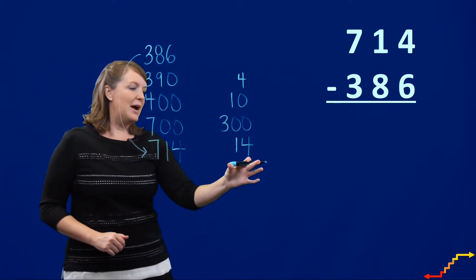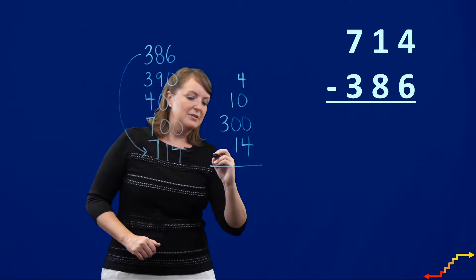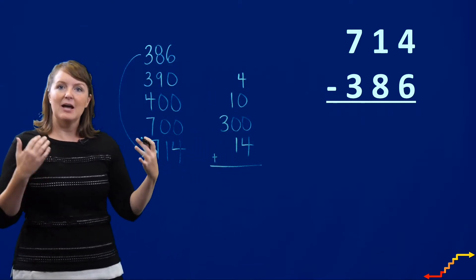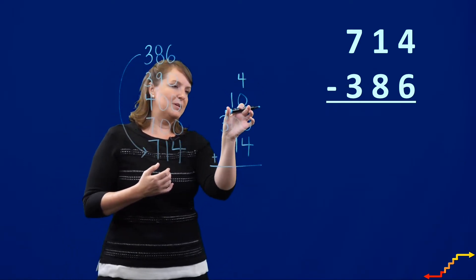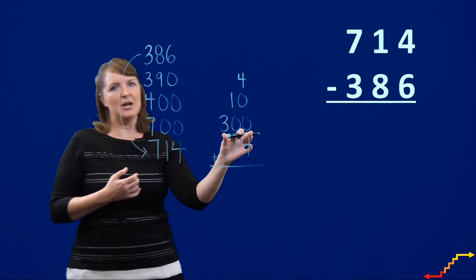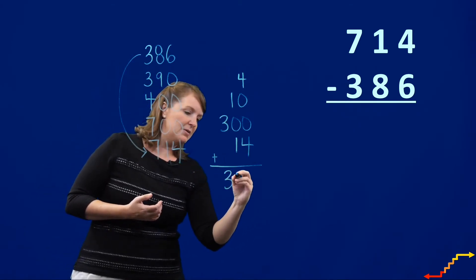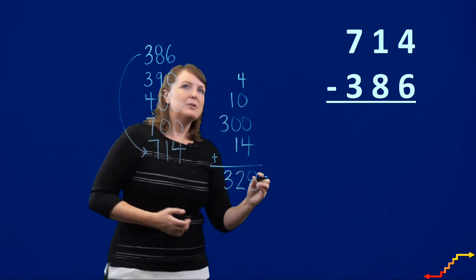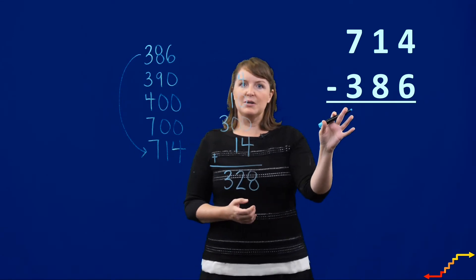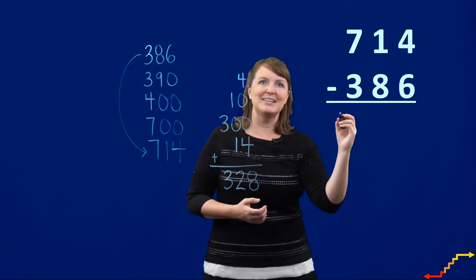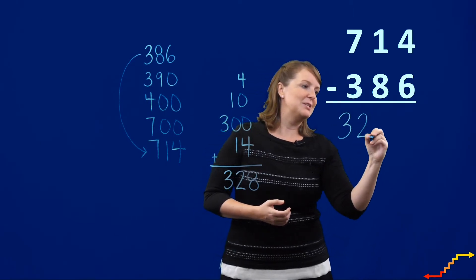Now I'm going to add these numbers over here together to figure out what is the difference between 386 and 714. So let's see, 4 plus 10 is 14, plus 300 is 314, plus another 14 is 328. So the difference between 714 and 386 is 328.